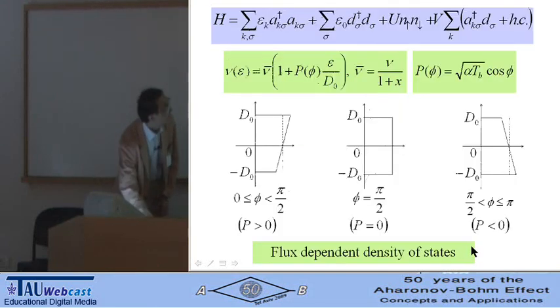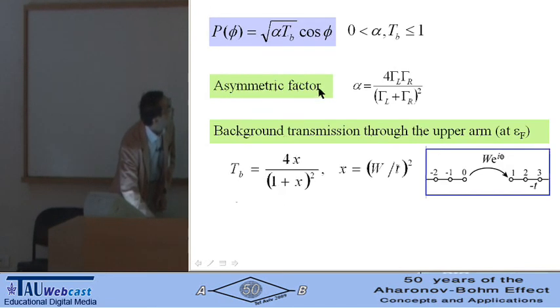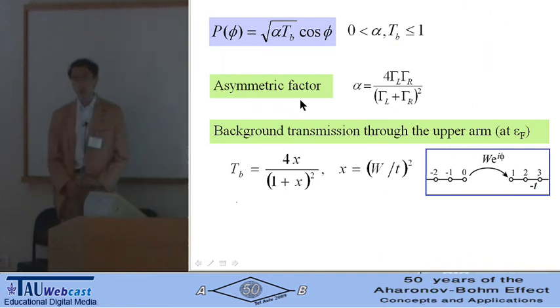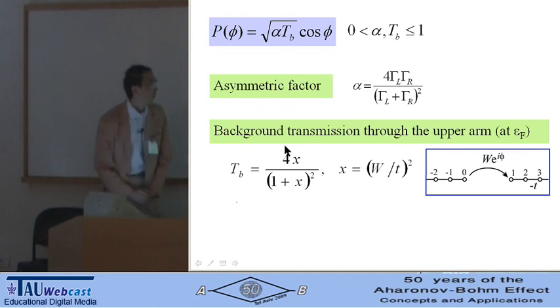Flux dependence is taken into account through this function P(φ). Here, α is the asymmetric factor of two tunnel barriers, and Tb is the background transmission through the upper arm. Both are between zero and unity.